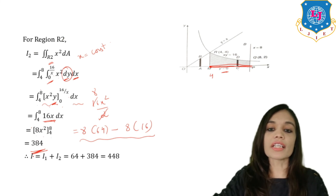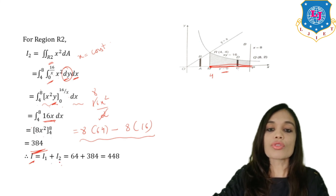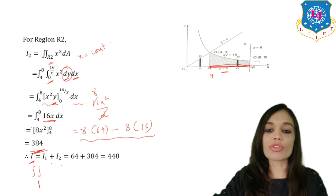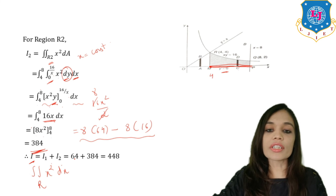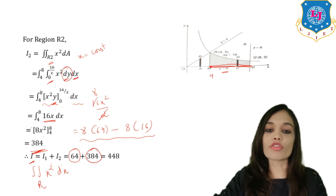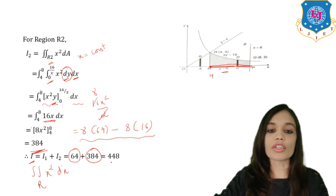The final answer is I = I1 + I2. So the total integral of x² dA over R is 64 + 384 = 448.